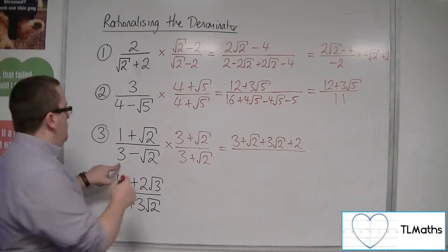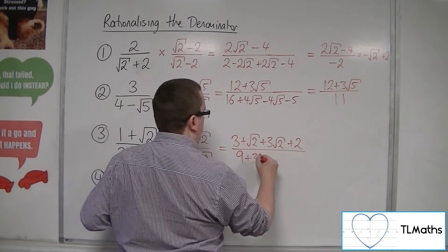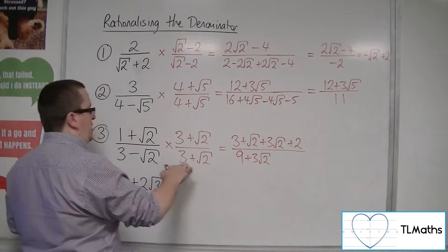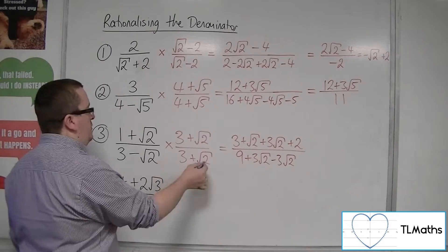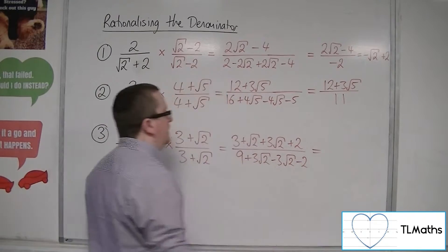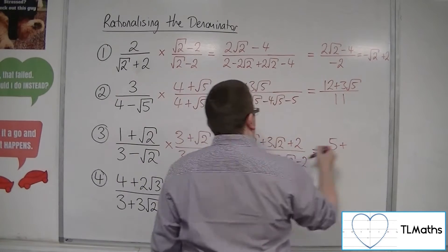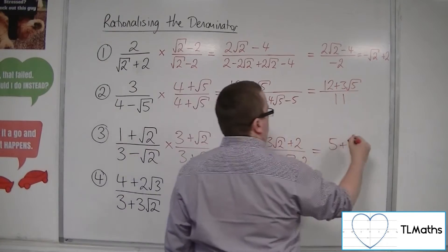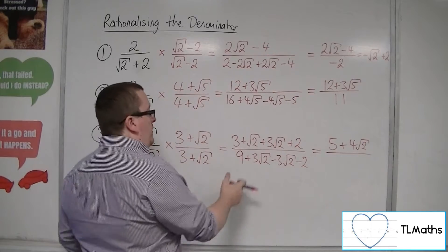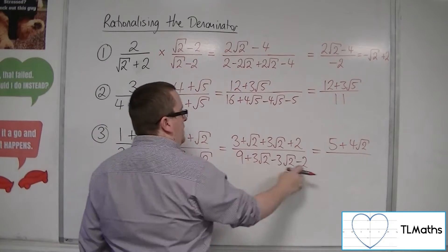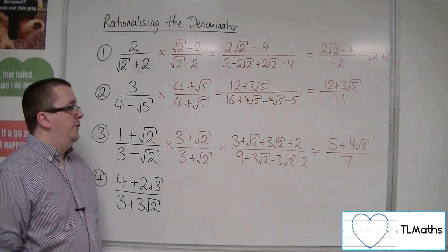In the denominator we've got 3 times 3 is 9, then 3 times root 2, then 3 times minus root 2, and minus root 2 times root 2. So we have 3 plus 2, giving 5 plus 4 root 2 in the numerator. In the denominator the roots cancel and 9 take away 2 is 7. So 5 plus 4 root 2 over 7 is the answer.